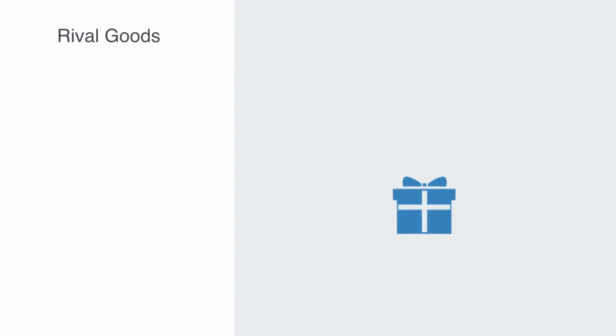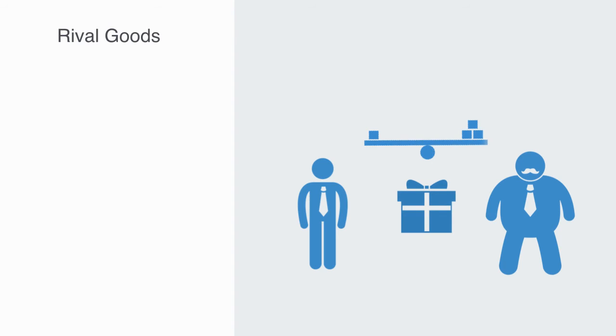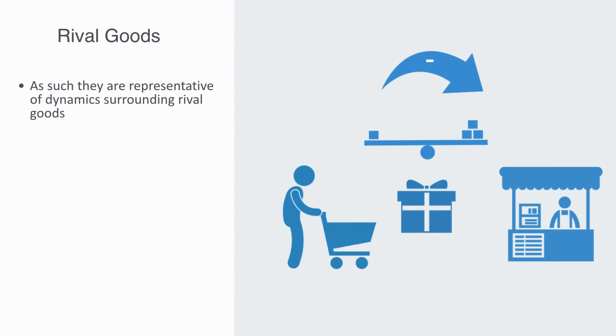Negative links define closed systems. As such, they are representative of a dynamic surrounding a rival good. The more that one person uses of a rival good, the less that another one can. Value is excludable. Thus, we get a well-bounded, well-defined system. Marginal cost will approximate marginal benefit, with a trade-off between agents and an equilibrium, out of which we can create the market mechanism of supply and demand. Because nothing is being added or subtracted from the entire system, negative links have no externalities.